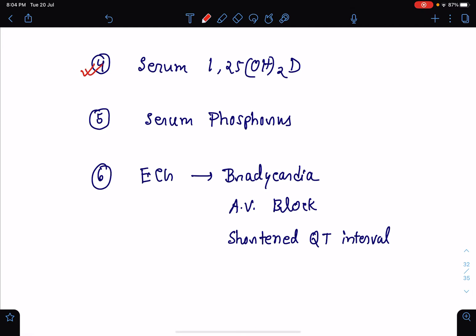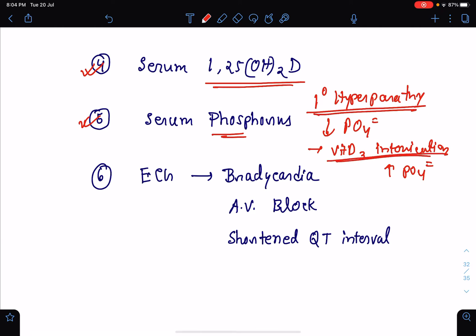We need to measure the serum 1,25-dihydroxy vitamin D level to see if there is excess level which may result in hypercalcemia. Serum phosphorus level is also very important. In case of primary hyperparathyroidism, the serum phosphate level is low. But in cases of vitamin D intoxication, the phosphate level will be high. This is how from the serum phosphorus we can differentiate between the primary hyperparathyroidism and vitamin D intoxication.